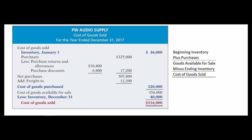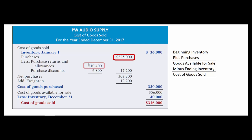So let's look at a cost of goods sold schedule for PEW Audio Supply. Their beginning inventory was $36,000, plus their purchases. Here are their purchase returns and allowances — that's the stuff they returned. Purchase discounts — that's the stuff they paid for early enough to take a 1% or 2% discount.